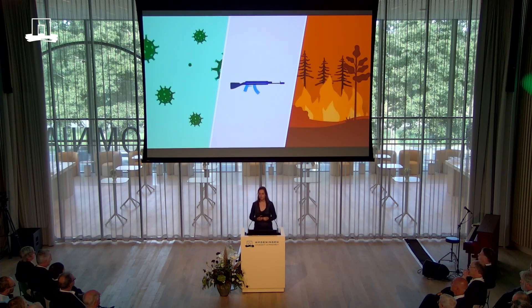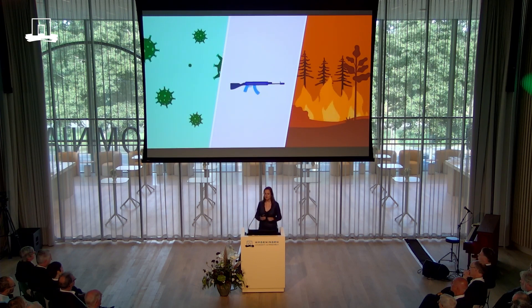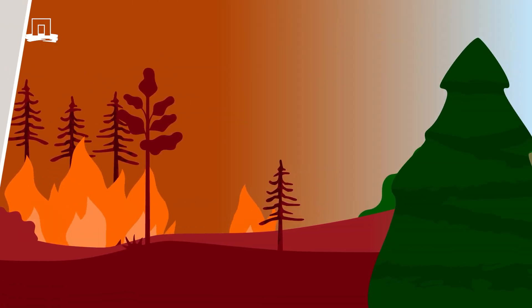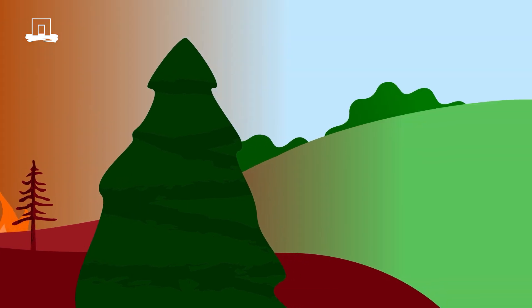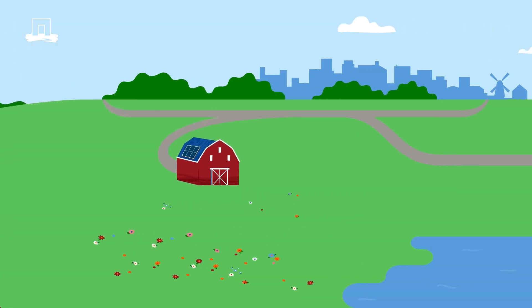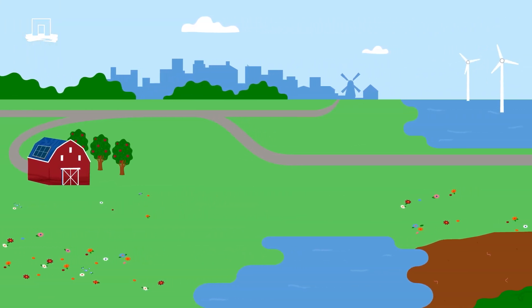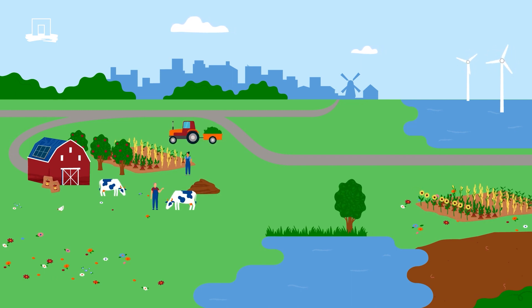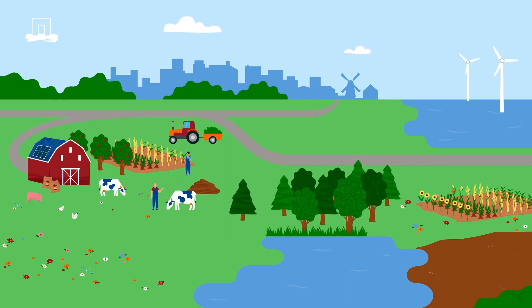It sometimes depresses me, as I want my children — actually all children — to have a bright future, to enjoy the biodiversity around us. But in general, I'm optimistic. Why? Because our research shows that we can redesign today's food system even without using new technologies.